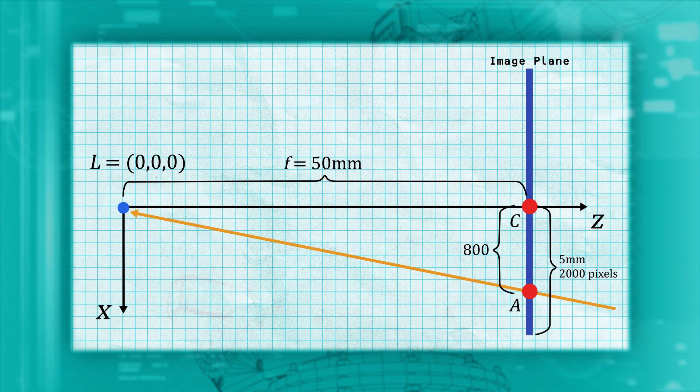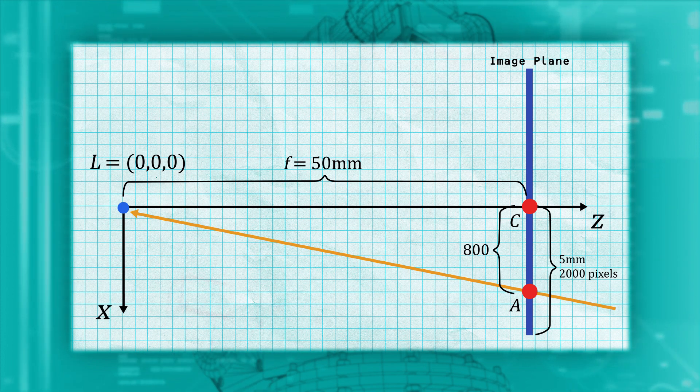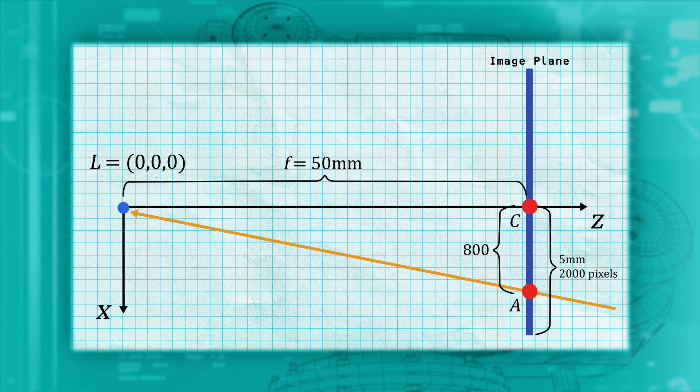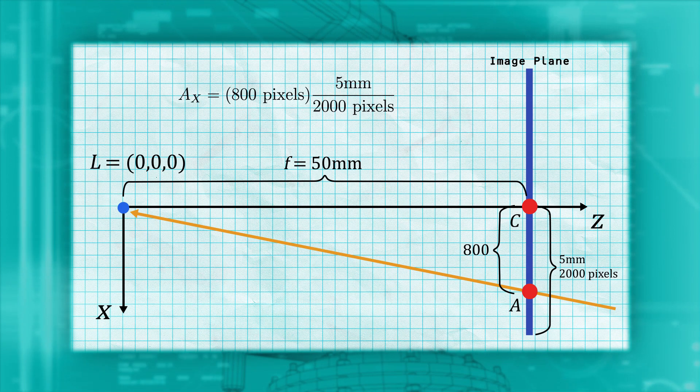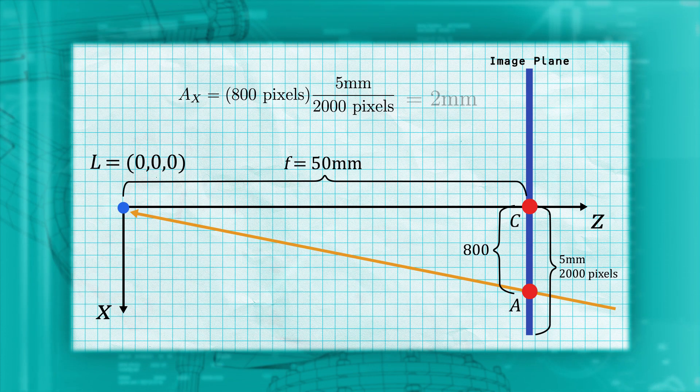Since the sensor is 10 millimeters wide, it is 5 millimeters from the center to the edge, and also 2000 pixels from the center to the edge. Taking our pixel coordinate for point A, we multiply by our ratio of 5 millimeters per 2000 pixels and get an X position of 2 millimeters.